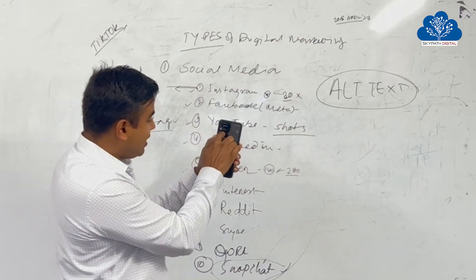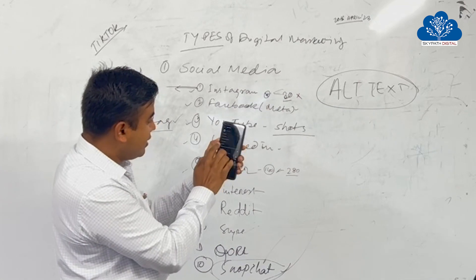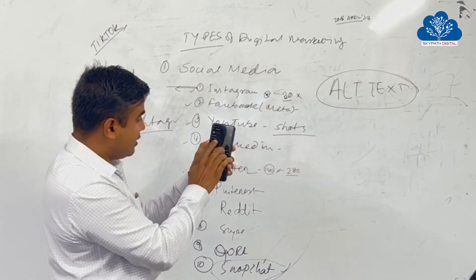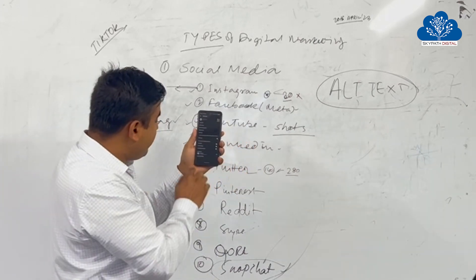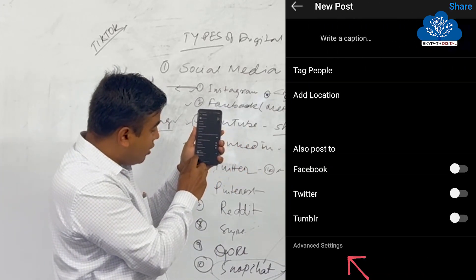Right, over here you have caption and everything - add location, message button, reminder, music, everything. Then if you go down, there is a button called advanced settings.